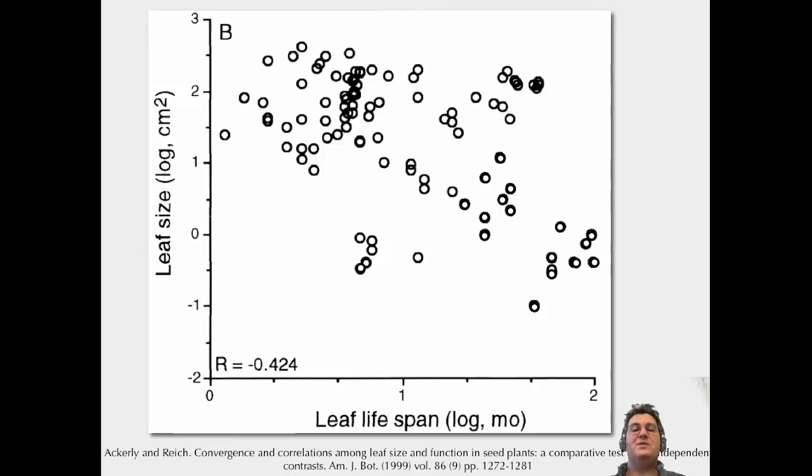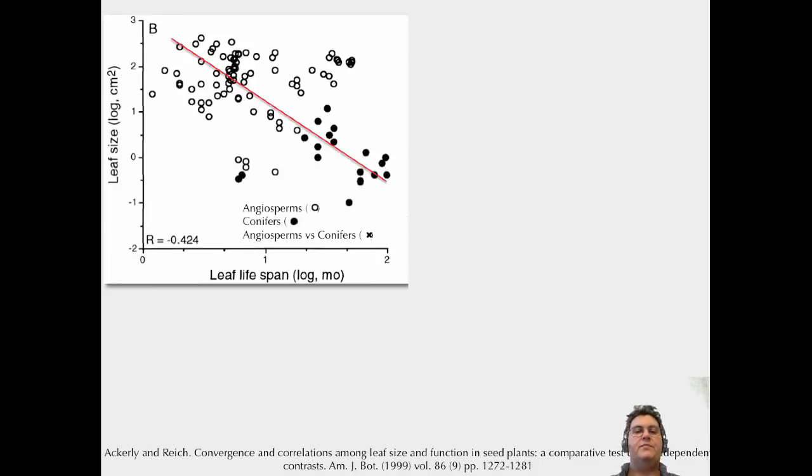It does help understand correlations between traits. Here are leaf size and leaf lifespan, paper by Ackley and Reich. We look at this, and it looks kind of weird. We have this negative correlation between those plants that have really long-lived leaves or really small leaves, and really big leaves, you lose quickly. It doesn't make a lot of sense. You think about, I have this giant, expensive leaf, I toss it away quickly. This tiny little leaf, I hold onto it for a long, long time. Why might that be?